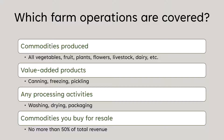Also covered are value-added products — anything you're canning, freezing, or pickling on your farm. Processing activities like washing produce for others or drying and packaging are included. Commodities you buy for resale are also covered, as long as resale doesn't exceed 50% of your total revenue. So if you need to replace some tomatoes or buy in a few bushels of corn, the whole farm policy covers that.